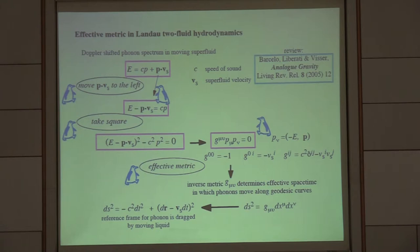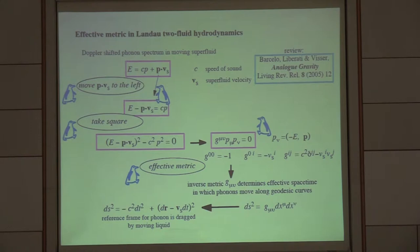We have effective metric, and we want to consider what is the effective space in which this particle moves. We must take the inverse metric G^μν. The inverse metric produces the ds, the interval of the effective space in which the particle moves. For the moving liquid, the interval is shifted by superfluid velocity. It means the reference frame for phonons is dragged by the moving liquid.